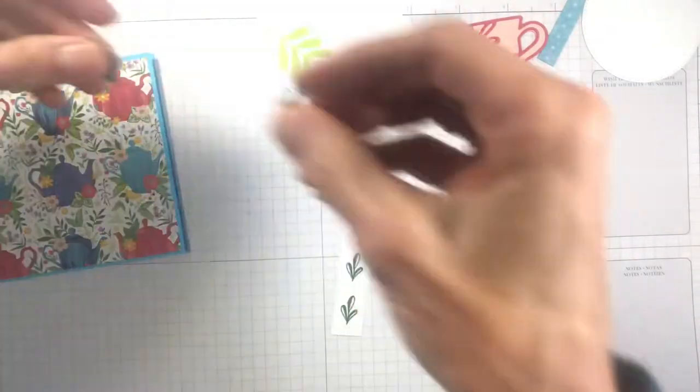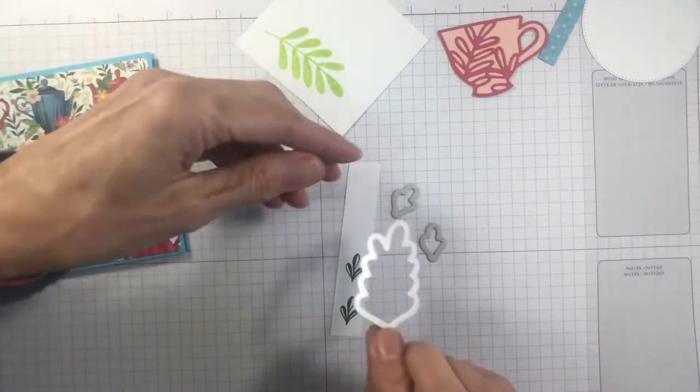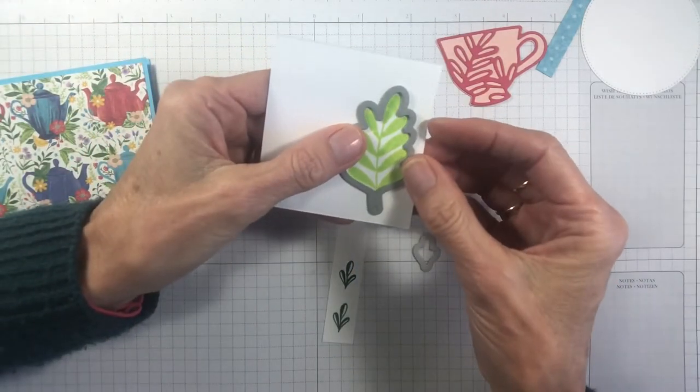So we'll go and die cut those out now with our dies. It's great that we have two of the little dies so we can do them all at once, and we have the outline of the leaf. So we'll just run and cut those out.